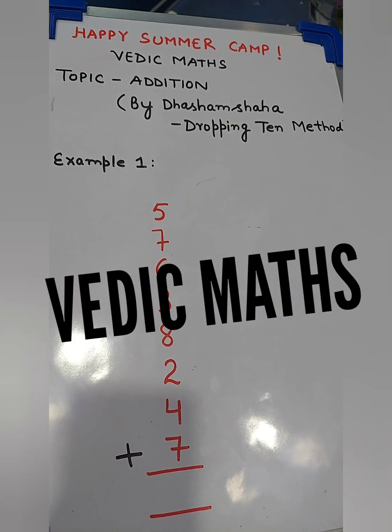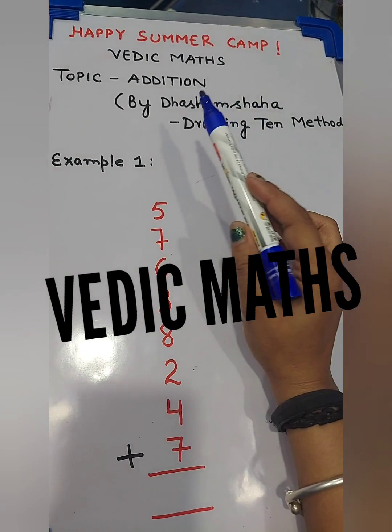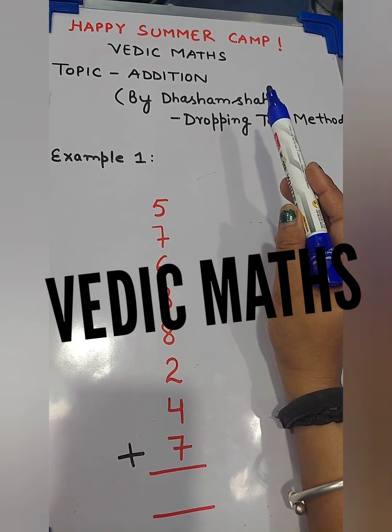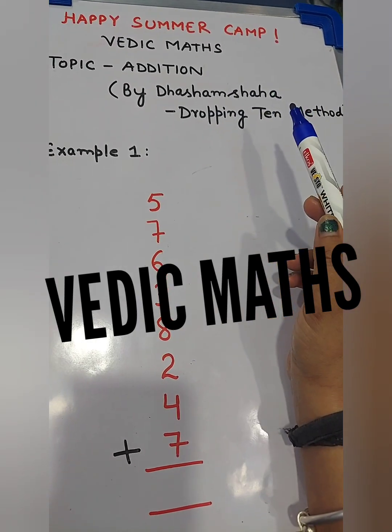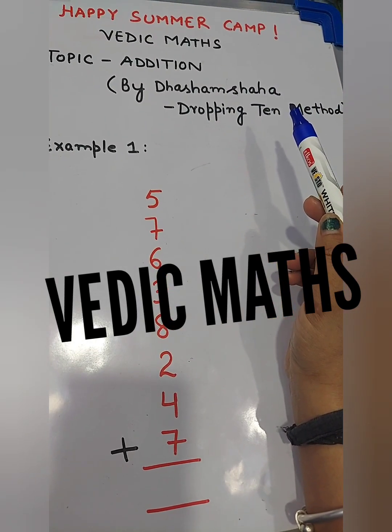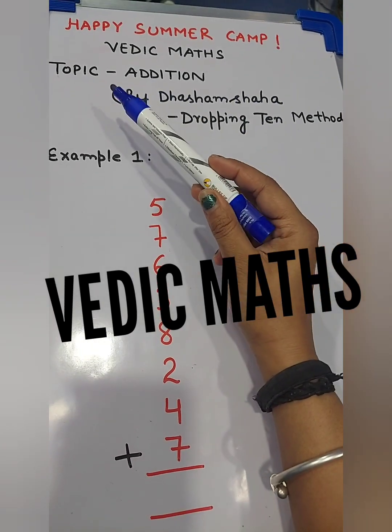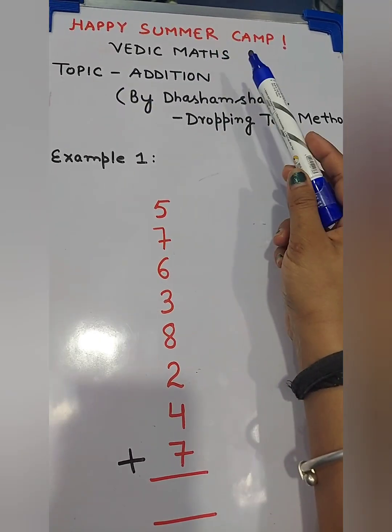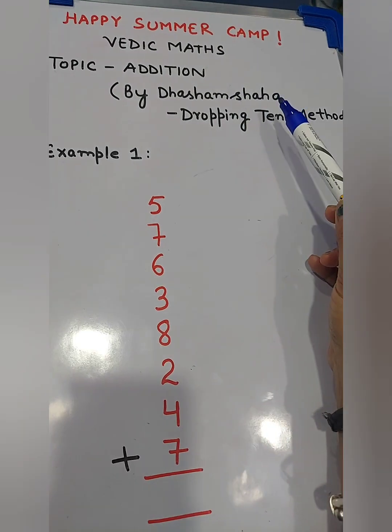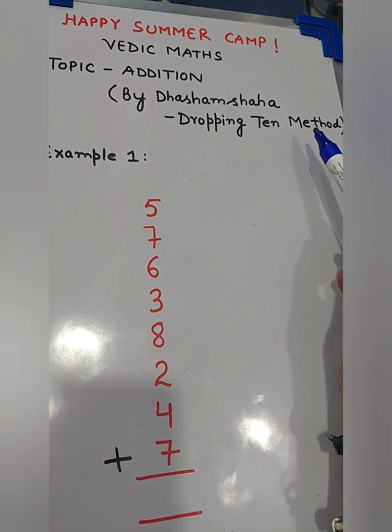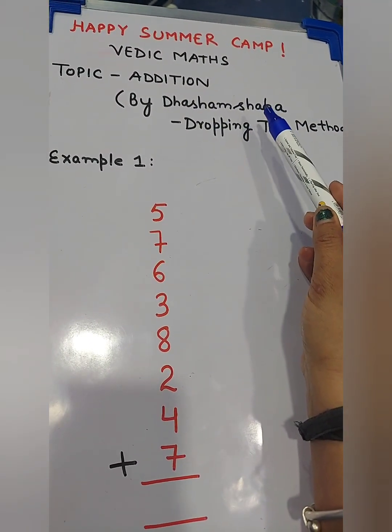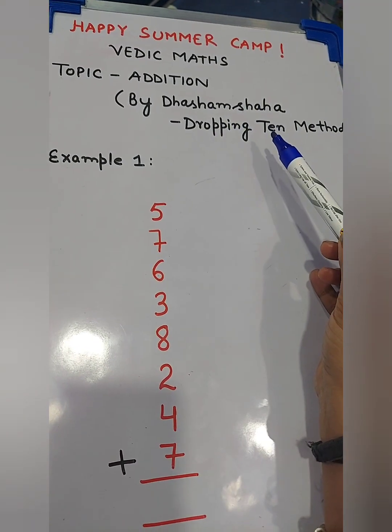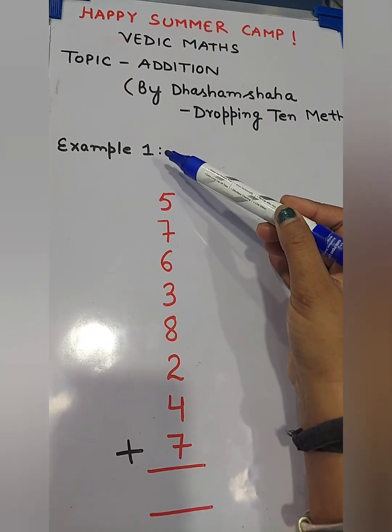Good afternoon students. Happy summer camp. Welcome to Vedic Maths class. Vedic Maths is actually an ancient system of mathematics based on 16 sutras. So let's start topic addition in Vedic Maths by Dasham Shaha means dropping 10 method. Dasham Shaha is a Sanskrit word and Dasham means 10. So let's start example 1.